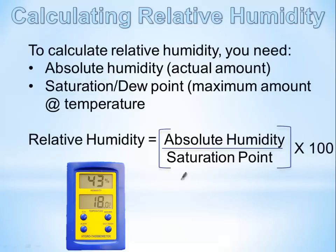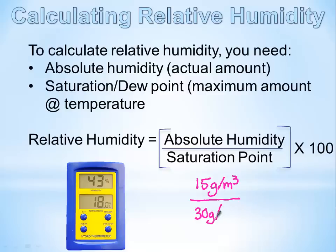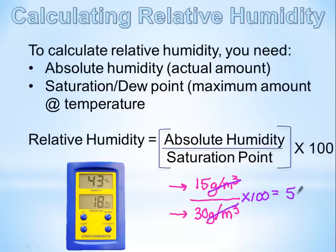For example, let's say the air is holding 15 grams per cubic meter of water vapor, and the saturation point at 25 degrees Celsius is 30 grams per cubic meter. The actual amount (15 g/m³) divided by the maximum amount (30 g/m³) — notice the units cancel — multiplied by 100 gives a relative humidity of 50%. That means the air is holding 50% of its maximum amount of water vapor.